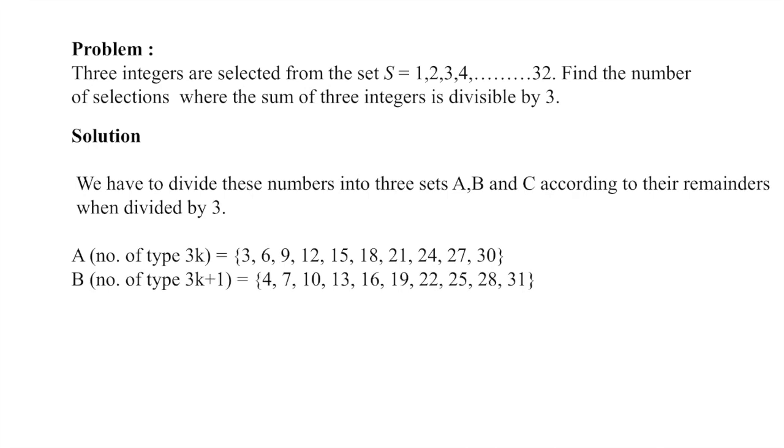Second set mein humay 3k plus 1 waale numbers rakhne: 4, 7 up to 31. Third set mein humay 3k plus 2 waale numbers rakhne. Tho humay in 32 numbers ko 3 sets mein partition kar liya hai.